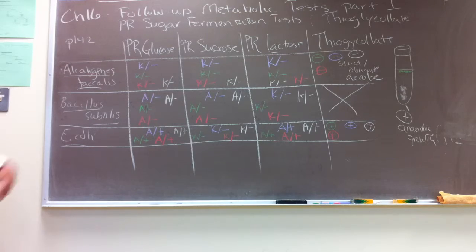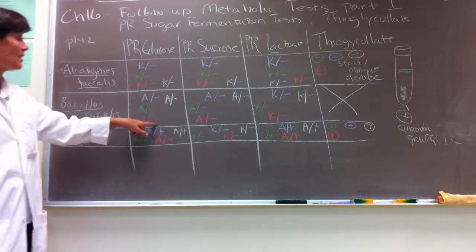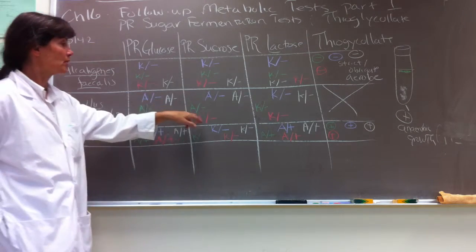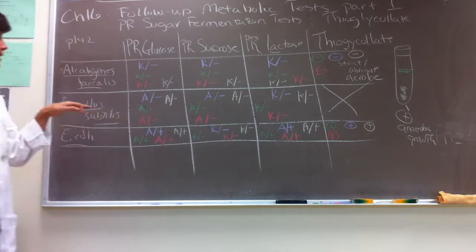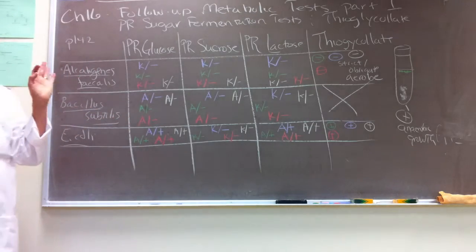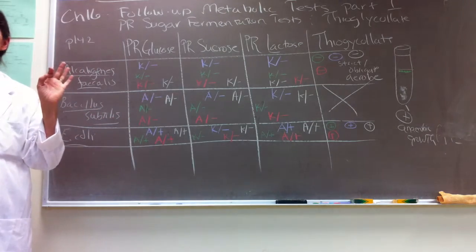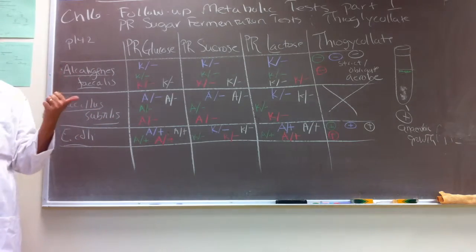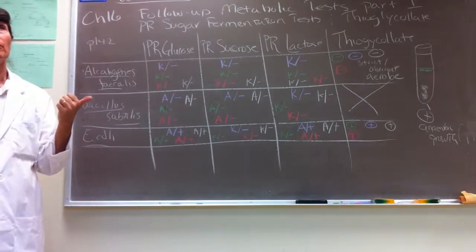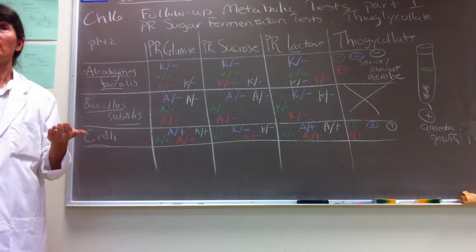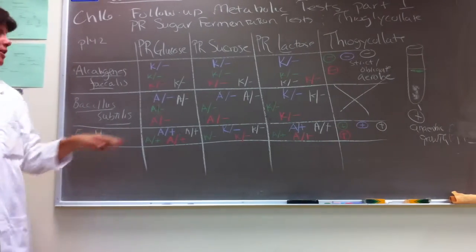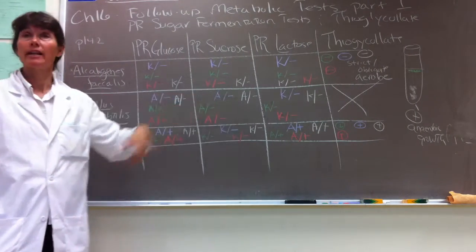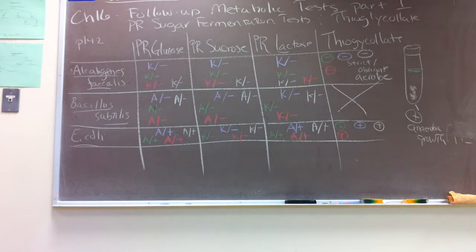Bacillus subtilis doesn't have the enzymes that would produce either molecular hydrogen or carbon dioxide during fermentation. That's why it was gas-negative on all of these sugars. Good job.